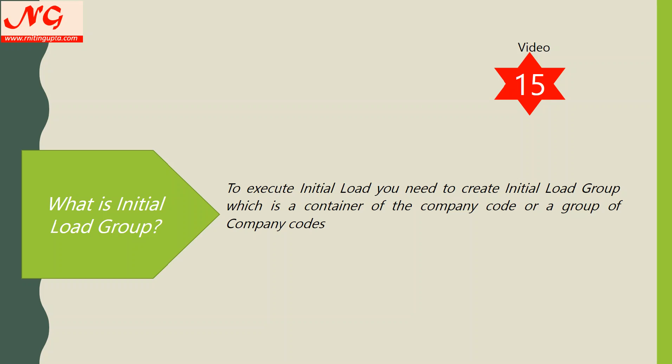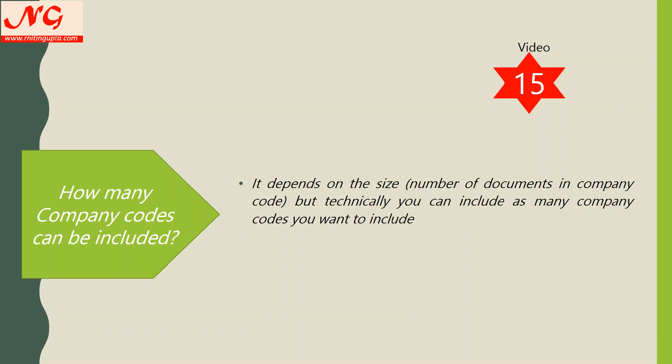What you do is take one company code from the source system. If you want to do the initial load for that company code, you cannot just go ahead and run the initial load by company code directly. Instead, you create an initial load group, under which you put one company code or a group of company codes — for example, 1, 2, 3 — and save it. Whenever you execute the initial load, it will always ask for which initial load group you want to execute; it will never ask which company code.